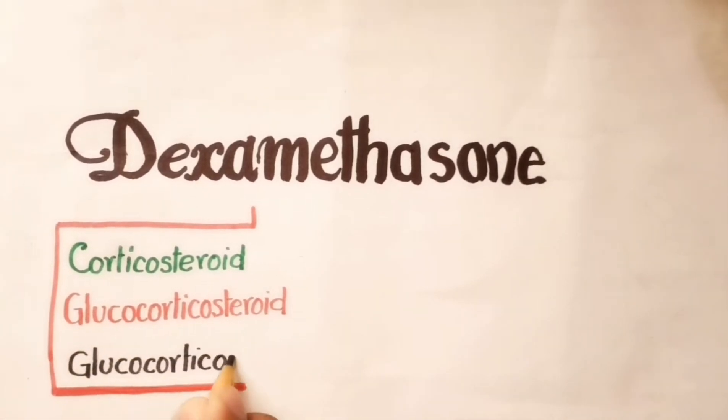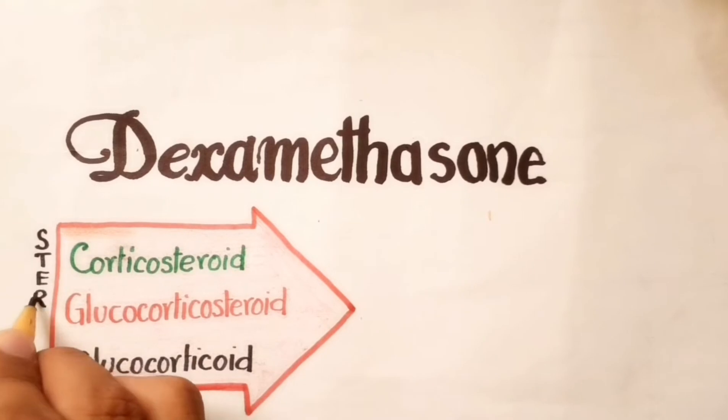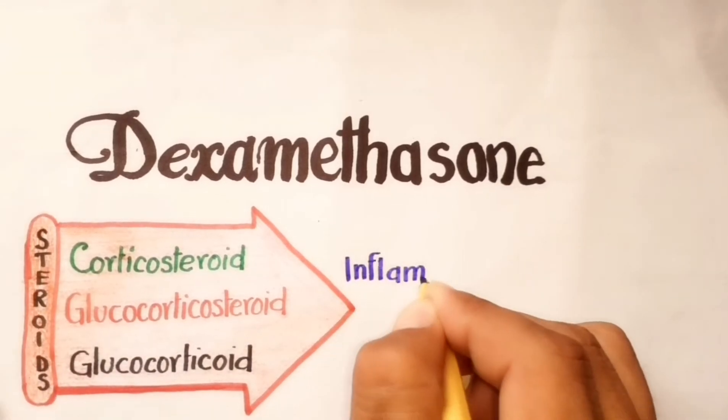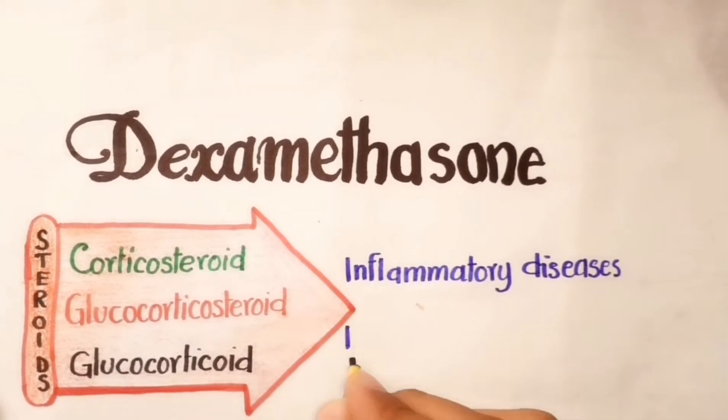Dexamethasone is a member of corticosteroids, also known as glucocorticoids. Glucocorticoids are steroids which are among the most widely used drugs in the world and are effective in many inflammatory and immune diseases.